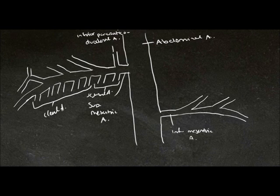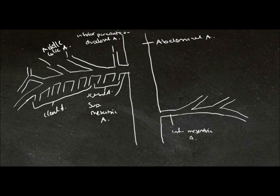So the superior mesenteric artery supplies all of the small intestine. The superior mesenteric artery also has branches which supply parts of the large intestine, and these are the middle colic artery, the right colic artery, and the ileocolic artery.